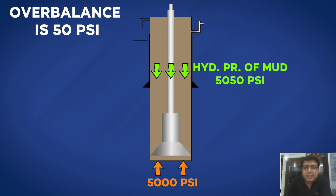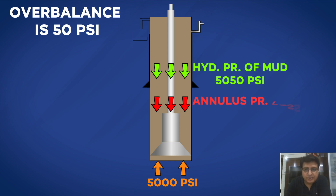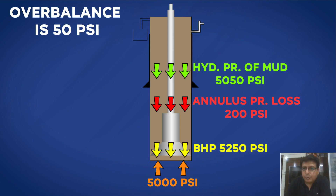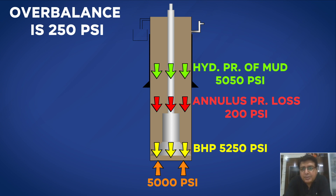During drilling, one more pressure is added at the bottom — that is the annular pressure loss (APL) or friction losses in the annulus. During drilling, the BHP is 5250 psi, so the overbalance is 250 psi. In this well during drilling there is no problem and no chance of gas coming into the wellbore, but what will happen when I stop for connection?